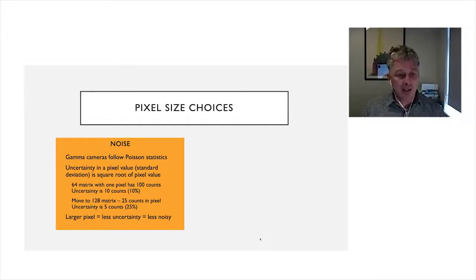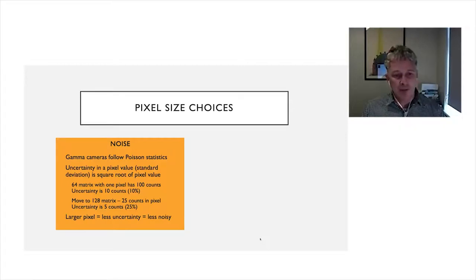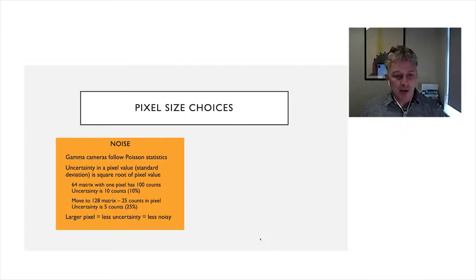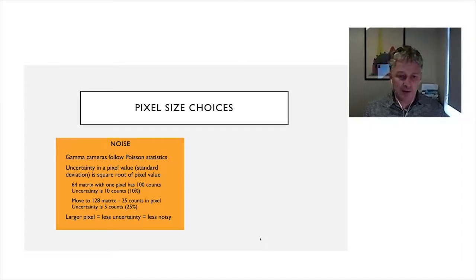If we acquired the same total counts but moved to a 1-to-8 matrix, the count density per pixel is reduced to 25 counts per pixel, and uncertainty increases to 25%. Using a larger pixel gives less uncertainty or less variability in the signal and less noisy data. So for certain tests, we might choose a less noisy image by using larger pixels. The compromise of course is spatial sampling — for things like spatial resolution, we need a smaller pixel size.